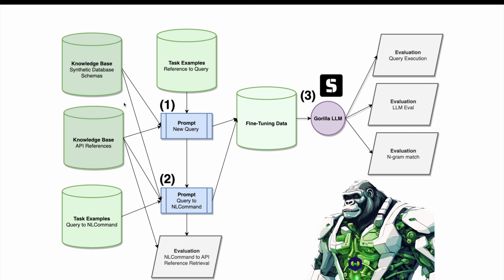We evaluate our Gorilla by first simply asking: does it execute in Weaviate? We loop through the schemas, instantiate them in Weaviate, and execute queries. Even without data in Weaviate, an incorrectly formatted query will give you an error message; otherwise it returns an empty list of results. We also use LLM evaluation — giving an instruction-response pair to GPT-4 and asking 'did this response follow the instruction?' We can also use reflection prompting to maybe correct the response. Other metrics include ground truth perplexity and N-gram match.